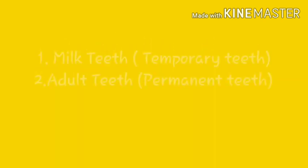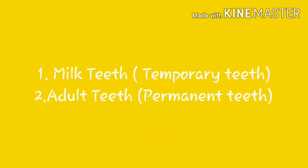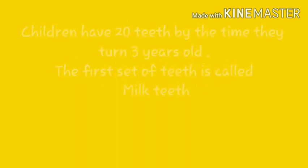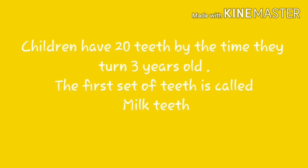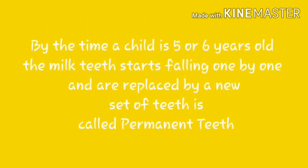Types of teeth: milk teeth, also called temporary teeth, and adult teeth, also called permanent teeth. Children have 20 teeth by the time they turn 3 years old. The first set of teeth is called milk teeth. By the time a child is 5 or 6 years old, the milk teeth start falling out one by one and are replaced by a new set of teeth called permanent teeth. An adult human normally has 32 permanent teeth.